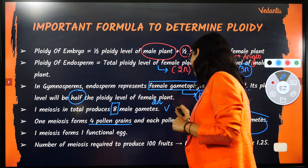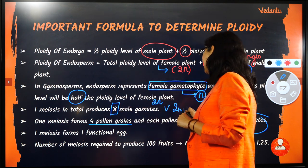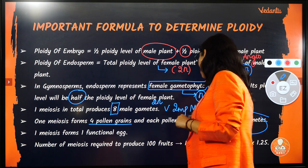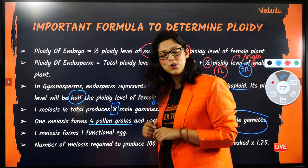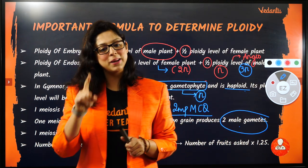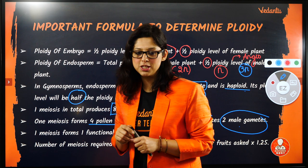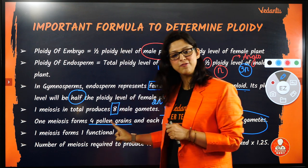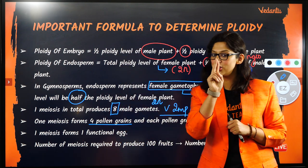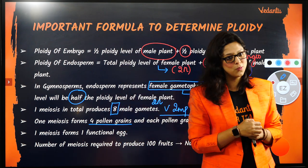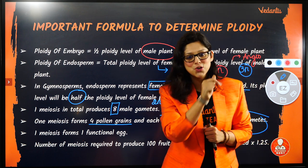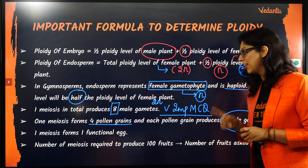This is a very important MCQ point. One meiosis in the male plant produces 8 male gametes — definitely 4 pollen grains are formed, and every pollen grain is at the 2-cell stage: 1 vegetative and 1 generative nucleus. So total male gametes from one meiosis are 8.